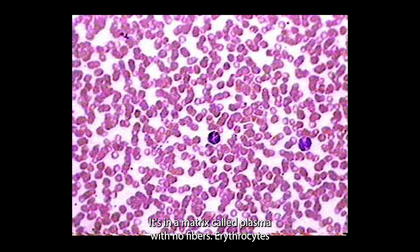Finally we've got blood. It's in a matrix called plasma with no fibers. Erythrocytes, leukocytes, and platelets are within blood vessels and heart. It carries respiratory gases, nutrients, hormones, waste products. And white blood cells protect from infection.